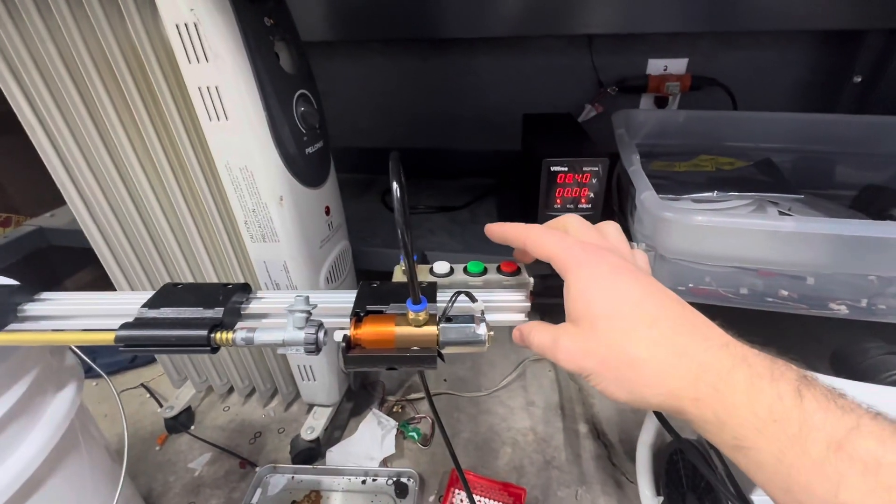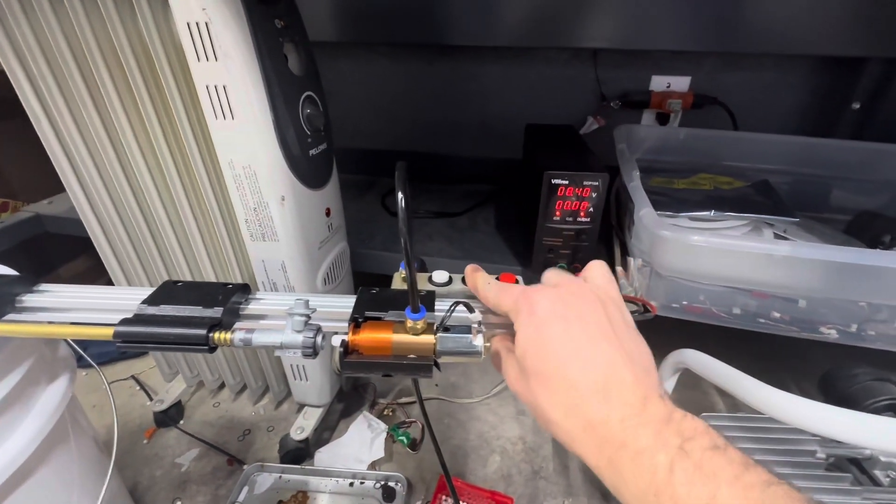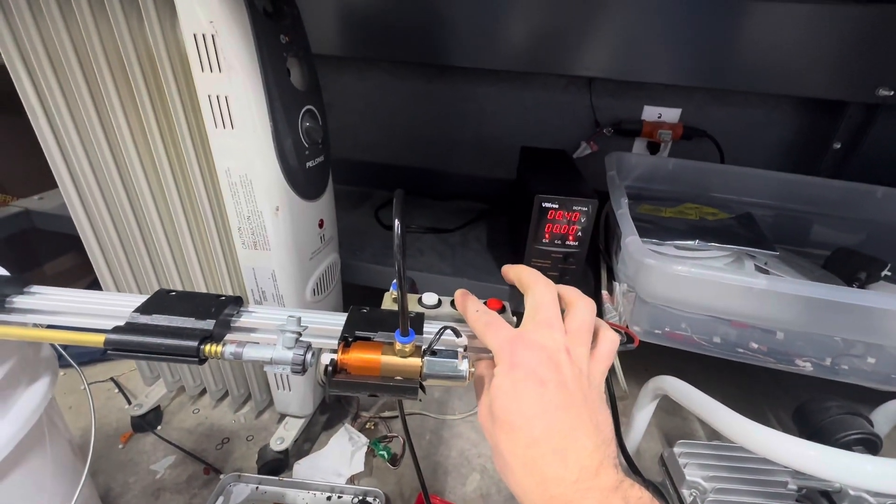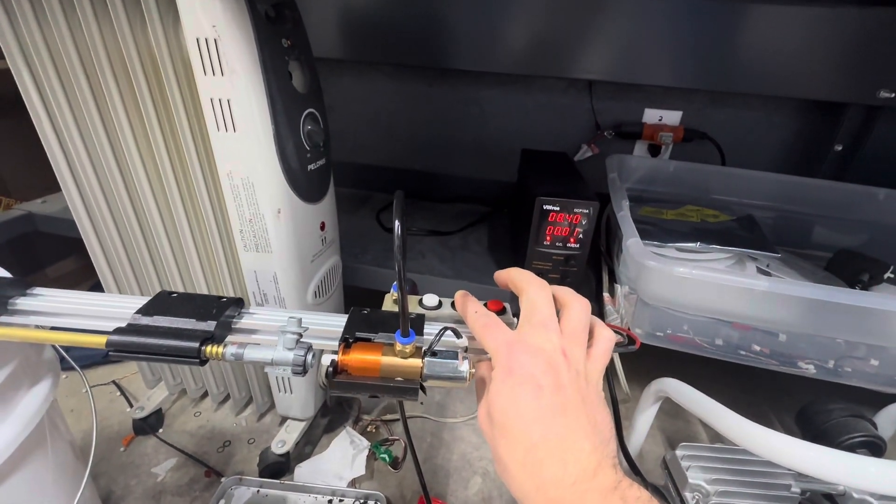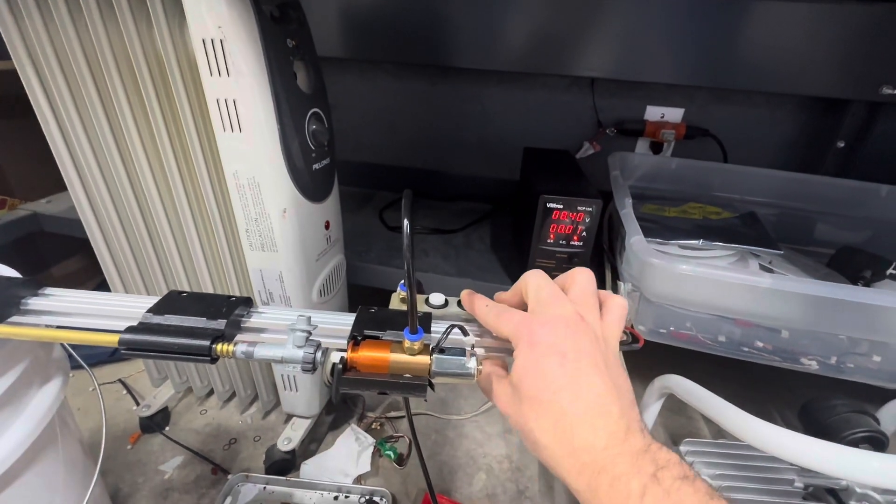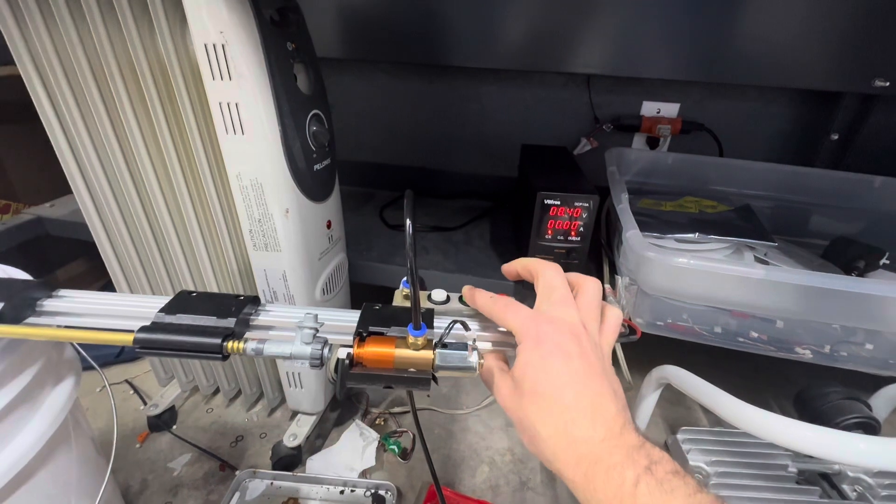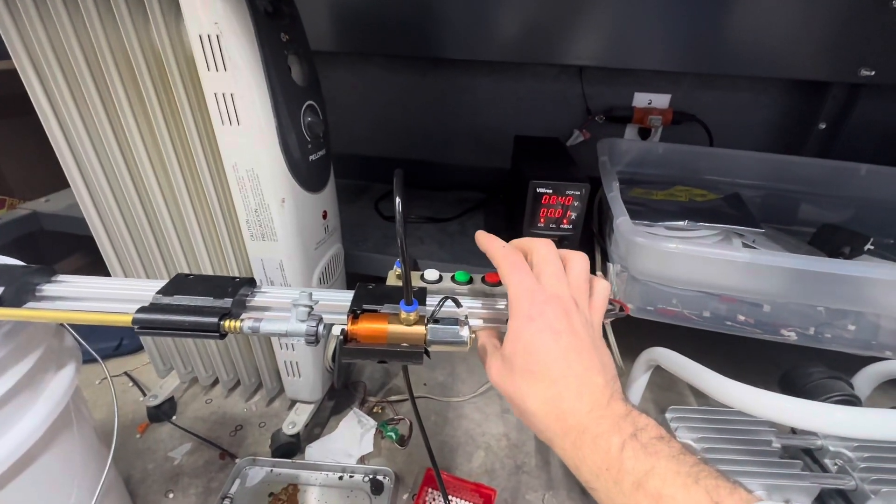So let's enter full-auto. What I'm going to do is hold the trigger for at least three seconds, and then switch the selector from safe into full-auto for one, two, and that's three seconds. Now I should be in full-auto.